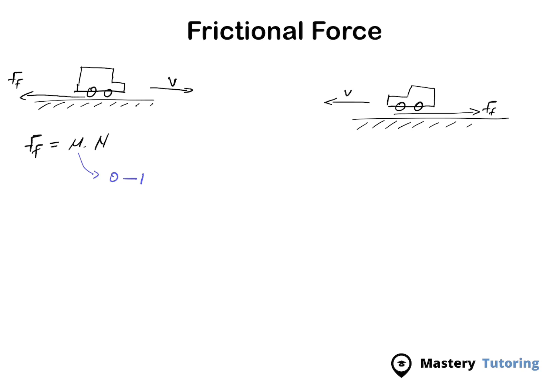In a case where mu is 0, the frictional force is going to be 0, meaning there is no frictional force between the contact surface and the object. In a case where mu equals 1, the frictional force is at its maximum for that object.